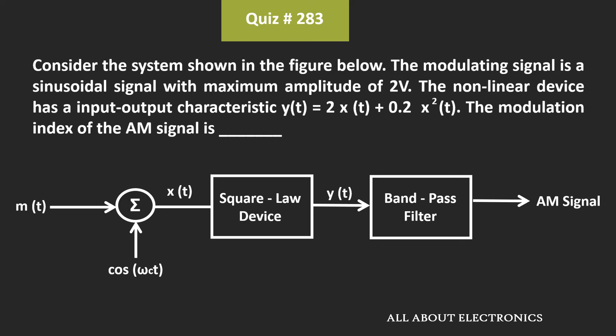So here, we have been given the input and output characteristics of this square-law device. And apart from that, we have been also given the characteristic of the modulating signal as well as the carrier signal. So here, we have been asked to find the modulation index of the AM signal.